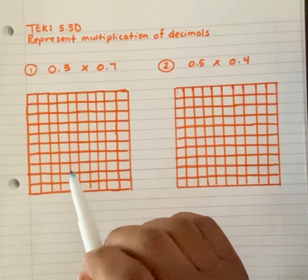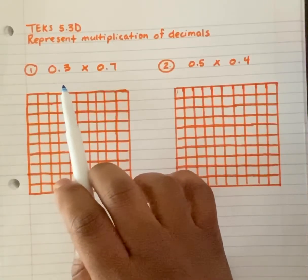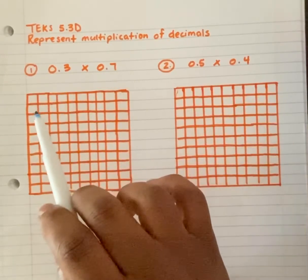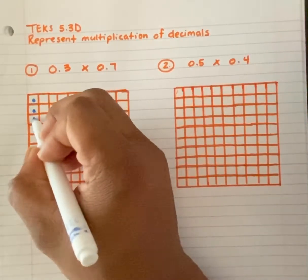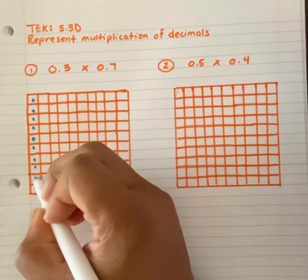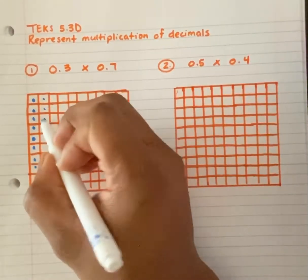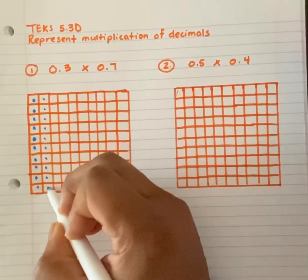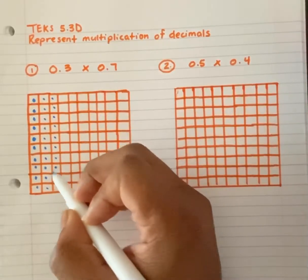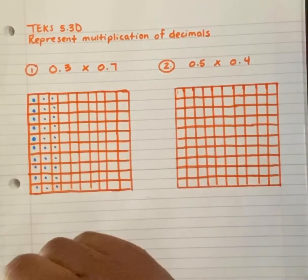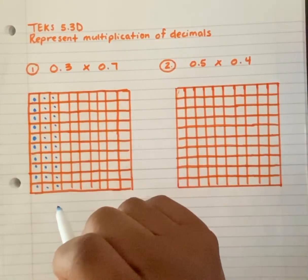My first step is to represent my 3 tenths. That also equals 3 rods, so I'm going to represent 3 rods here. There's 1 rod or 1 tenth, 2 rods or 2 tenths, and now this is my 3 rods or 3 tenths. I represented it using 3 rods vertically.